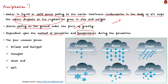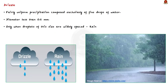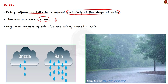Based on that, there are four common forms of precipitation. The first one is drizzle or rainfall. Drizzle is a fairly uniform precipitation composed exclusively of fine drops of water with diameter less than 0.5 mm. Only when droplets of this size are widely spaced is it called rain. Refer to the picture here for better understanding.